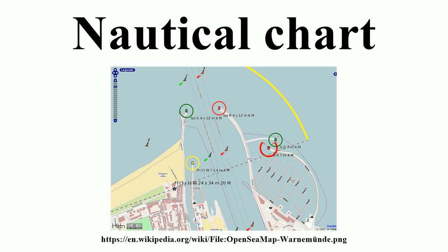A prudent mariner should obtain a new chart if he has not kept track of corrections and his chart is more than several months old. Various digital notices to mariners systems are available on the market, such as Digitrace, Voyager, or Chartco, to correct British Admiralty charts as well as NOAA charts. These systems provide only vessel-relevant corrections via email or web downloads, reducing the time needed to sort out corrections for each chart. The Canadian Coast Guard produces the Notice to Mariners publication which informs mariners of important navigational safety matters affecting Canadian waters. This electronic publication is published on a monthly basis and can be downloaded from the Notices to Mariners website. The information in the Notice to Mariners is formatted to simplify the correction of paper charts and navigational publications.